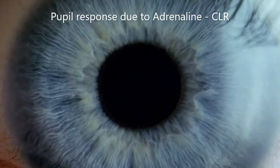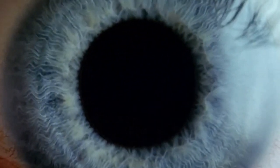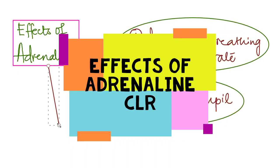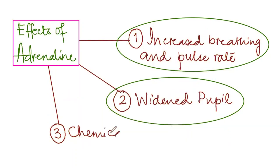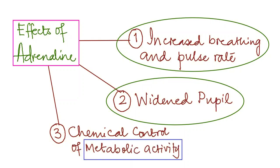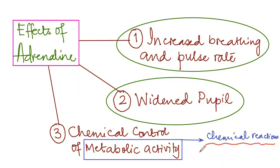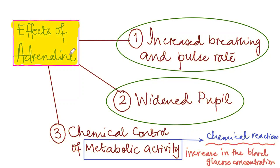The third role of adrenaline is in the chemical control of metabolic activity. Metabolic activity refers to the chemical reactions taking place in the body. As a result, stored glycogen in the liver is converted into glucose, resulting in an increase in blood glucose concentration.